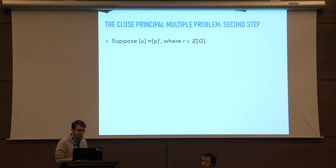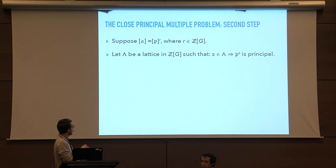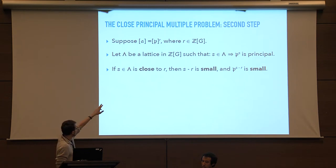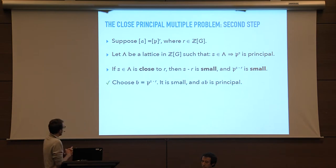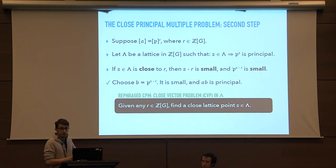Our second ingredient is the following. Suppose we have written A as P to the power R, where the exponent R is in the group ring. Now suppose you have a lattice lambda in the group ring such that for any element S in lambda, the ideal P to the S is principal. If an element S in lambda is close to R, then S minus R is small, and the ideal P to the power S minus R will also have small norm. So we can choose B to be P to the power S minus R, and the product AB is principal and B is small. We have rephrased the close principal multiple problem as a closest vector problem in the lattice lambda: given any R in the group ring, can we find a close lattice point S in lambda?